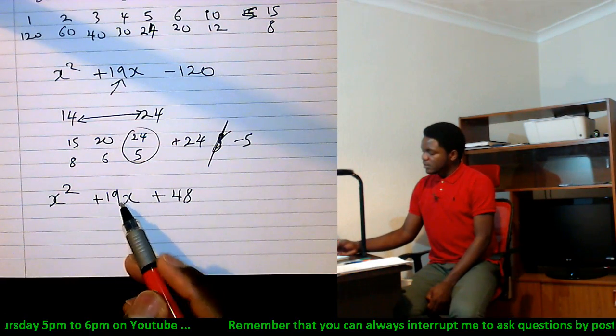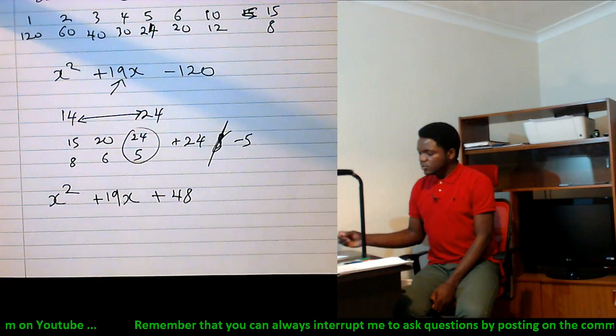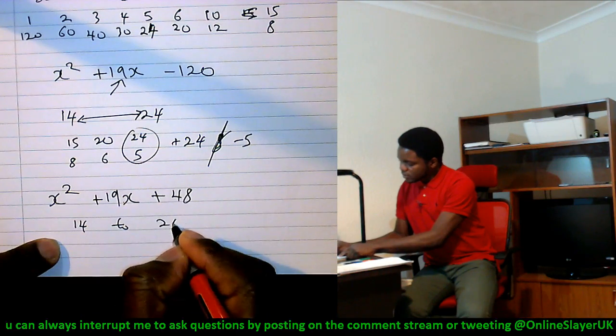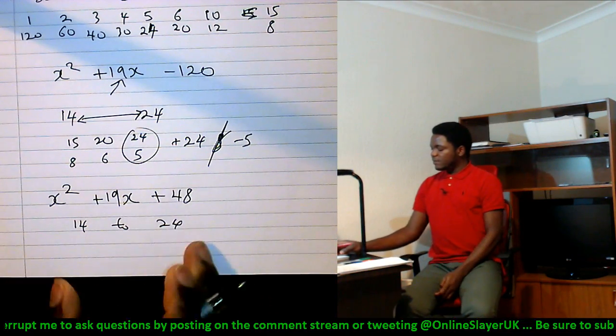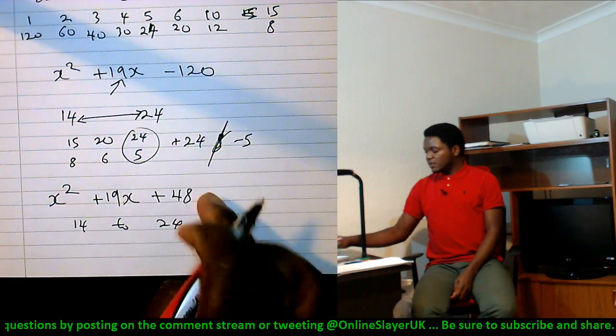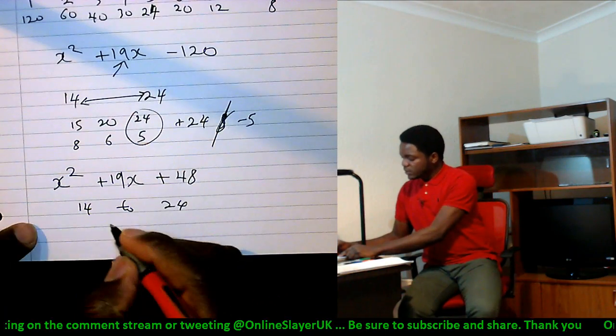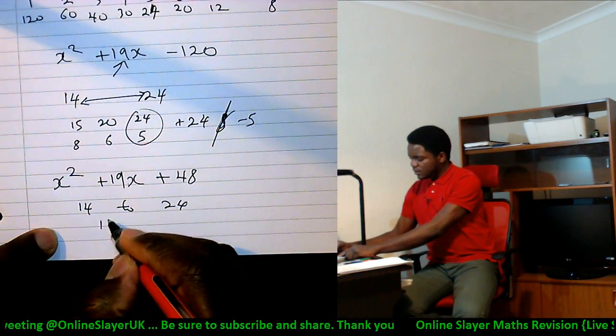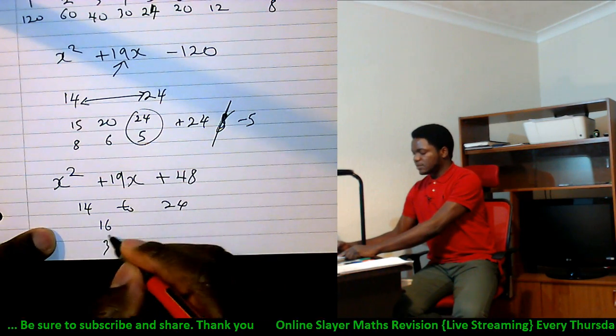We're also going to be looking at between 14 and 24. From 14 to 24, what are the values that are factors of 48? Is 14 a factor? No. 15? No. 16? Yeah, 16 is a factor. That's 16 times 3, isn't it?